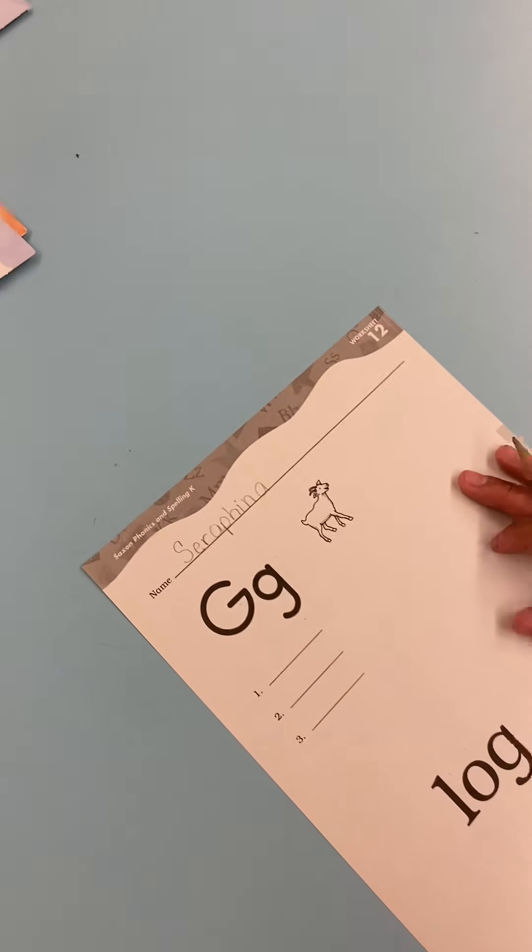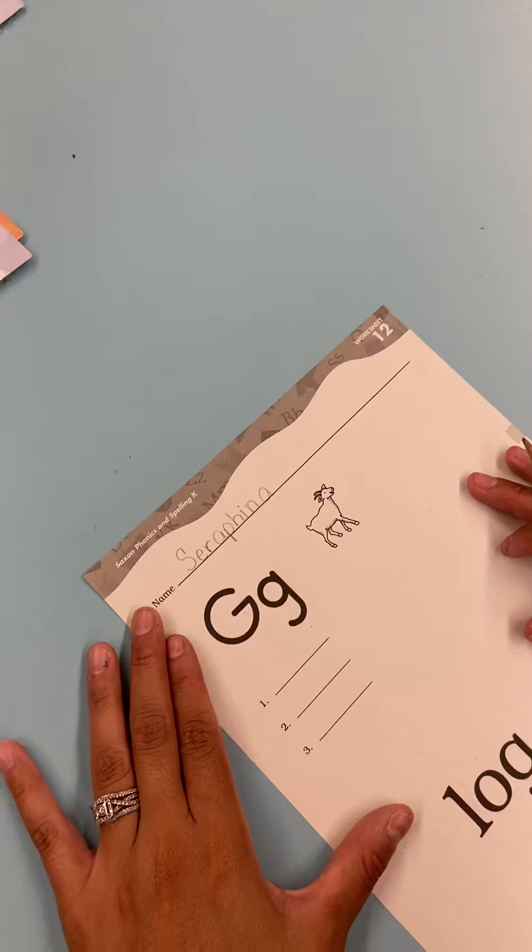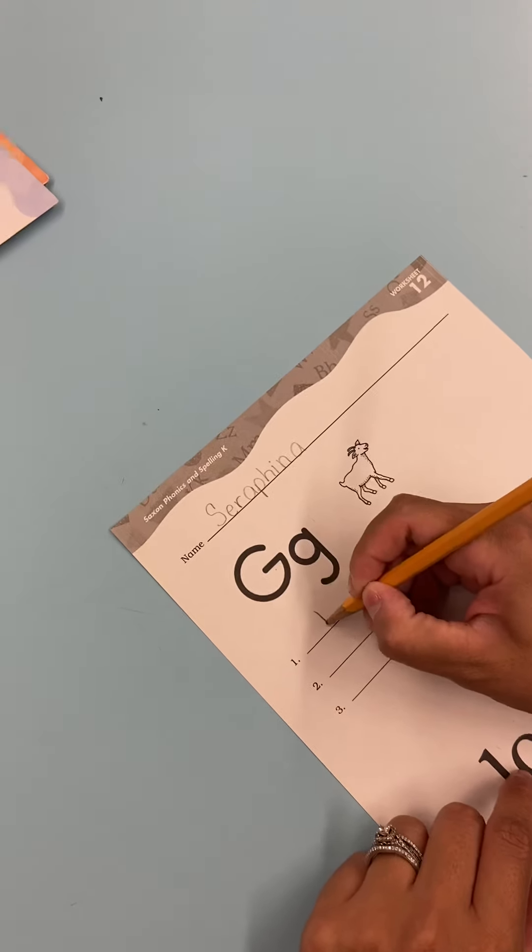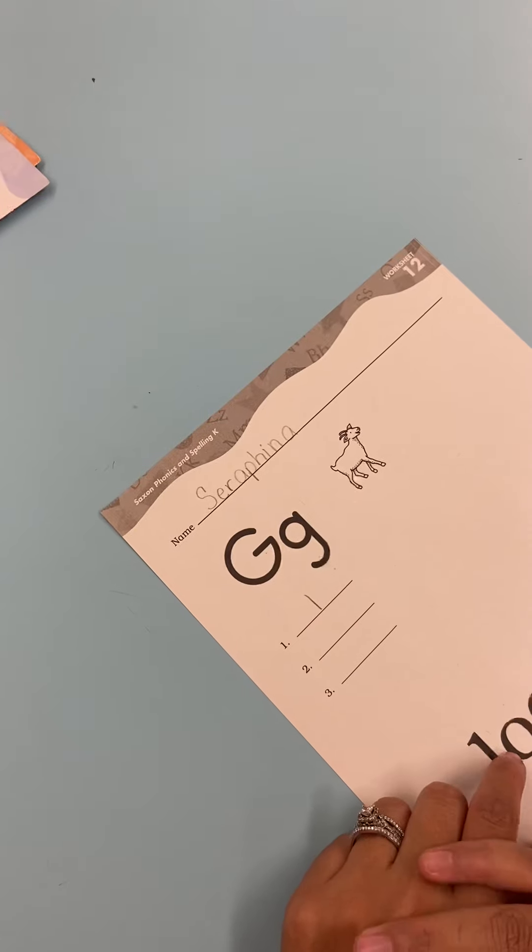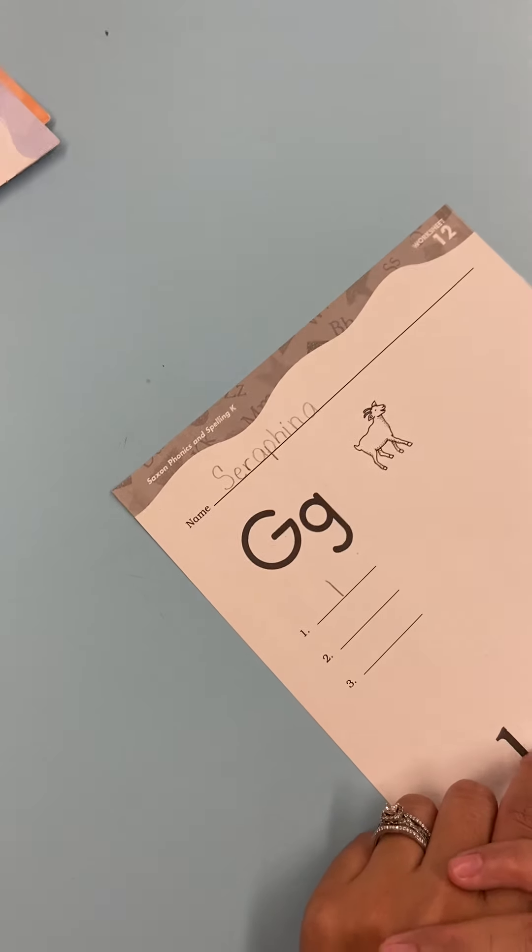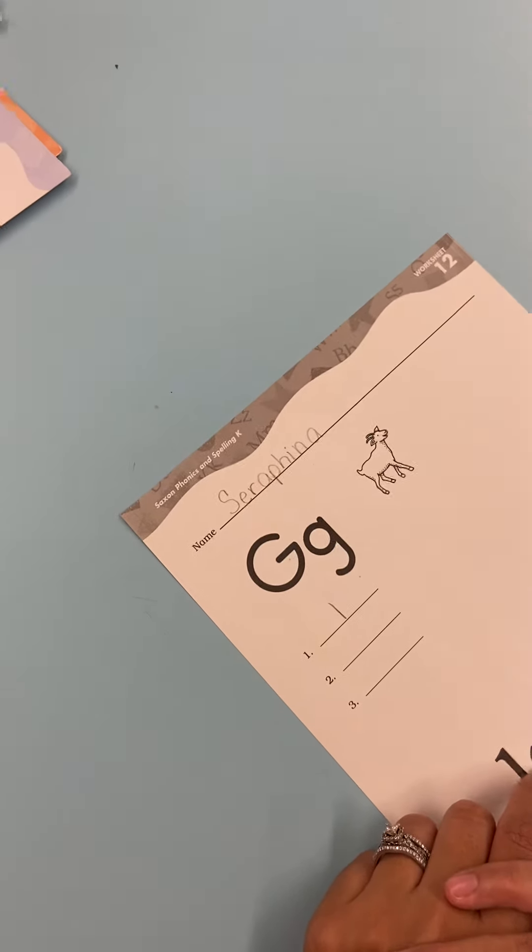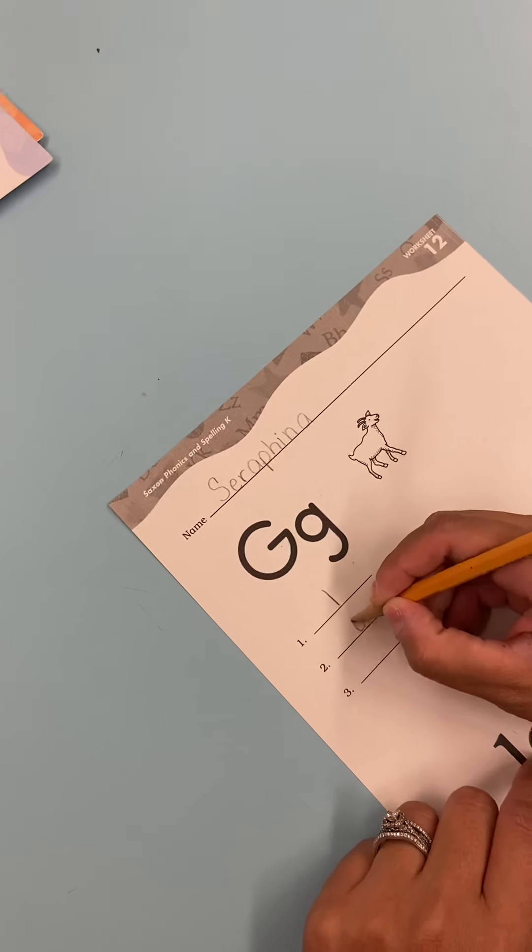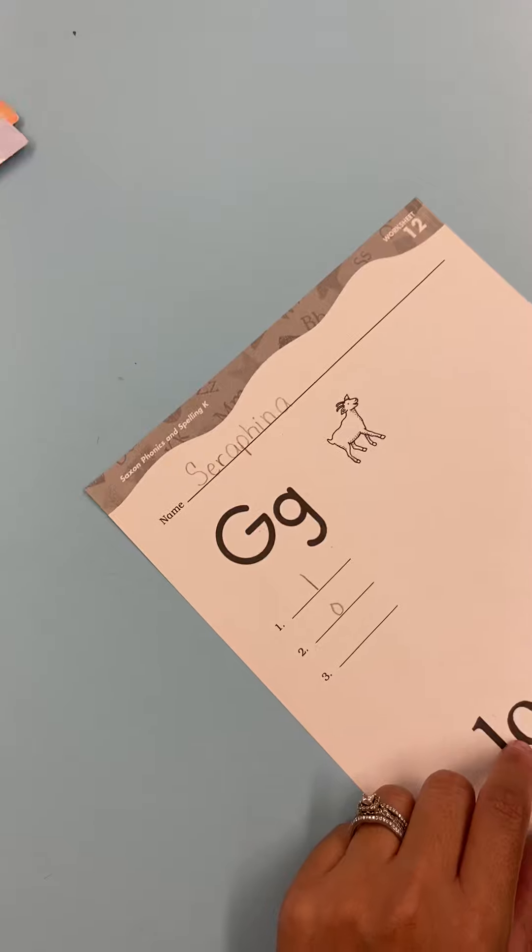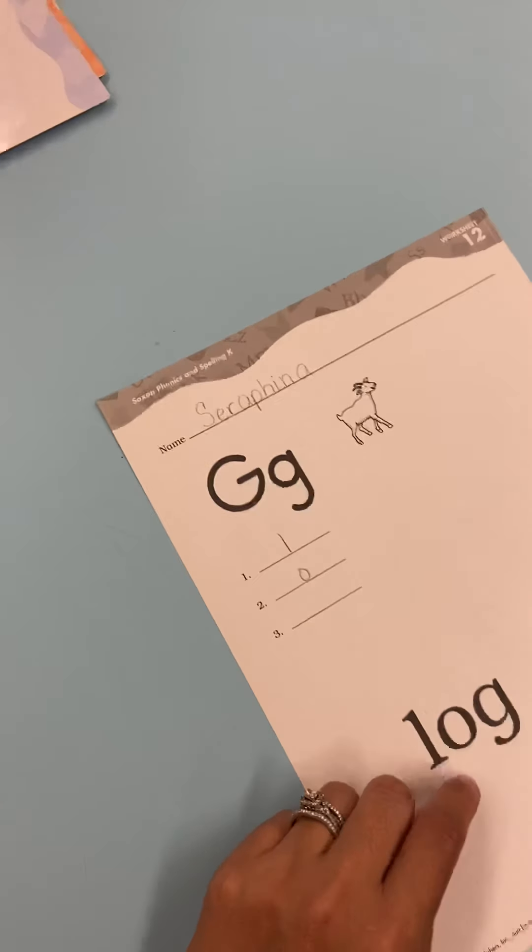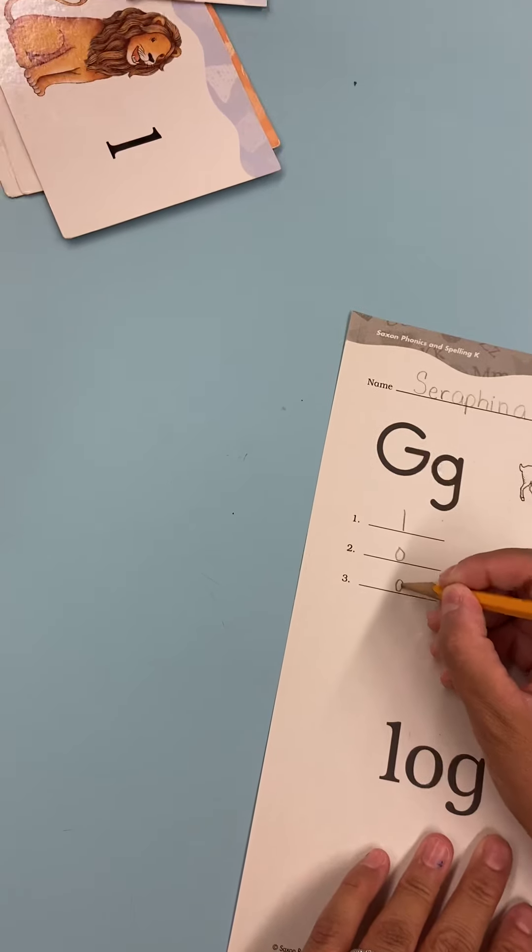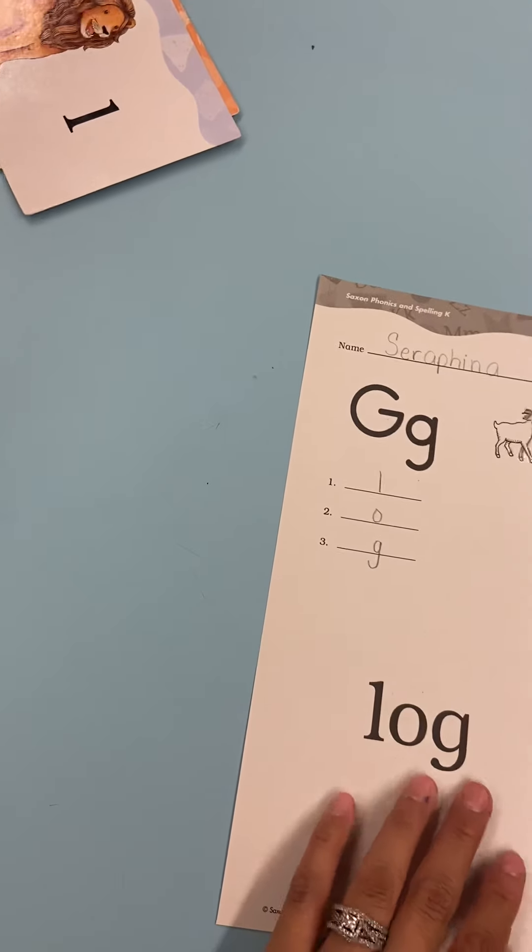Okay. For number one, please write the letter that makes the sound of L. Lowercase only, please. You should have written the letter L. Number two is O. You should have written the letter O. Number three, G. Please write the letter G.